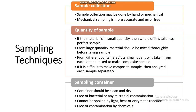Sampling techniques begin with sample collection, which may be done by hand or by mechanical means — mechanical sampling is more accurate and error-free. Regarding quantity: if the material is in small quantity, the whole of it is taken as a perfect sample. From large quantities, the material should be mixed thoroughly before taking a sample. From different containers or lots, a small quantity is taken from each lot and mixed to make a composite sample.